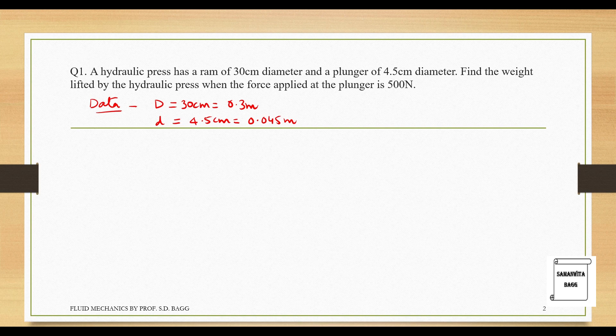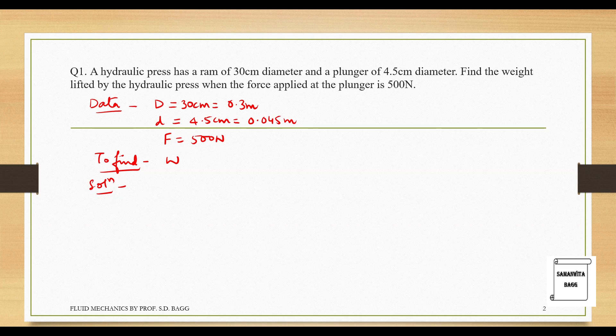Find the weight lifted by the hydraulic press when the force applied at the plunger is 500 N. So, the force applied at the plunger is 500 N as given. I need to find the weight that can be lifted by the hydraulic press. Now, when we have to solve this numerical, it is nowhere mentioned that it is a case of Pascal's law. So, let's draw a small figure.